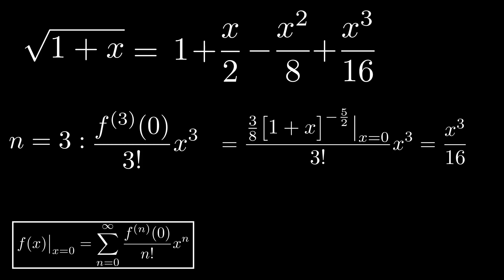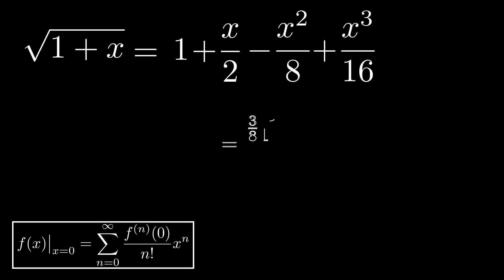And this procedure can go on forever. However, in most realistic cases, the first couple of terms suffice to approximate the function well enough. In fact, in most of physics, the square root of 1 plus x is approximated by 1 plus x over 2, only the first two terms in the Taylor expansion.